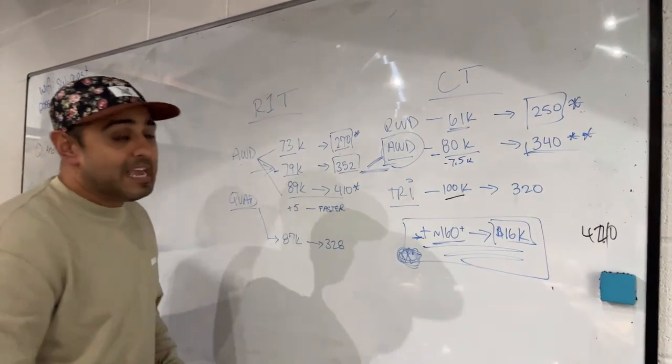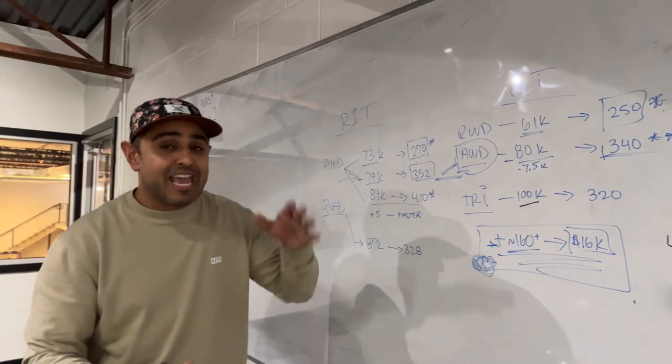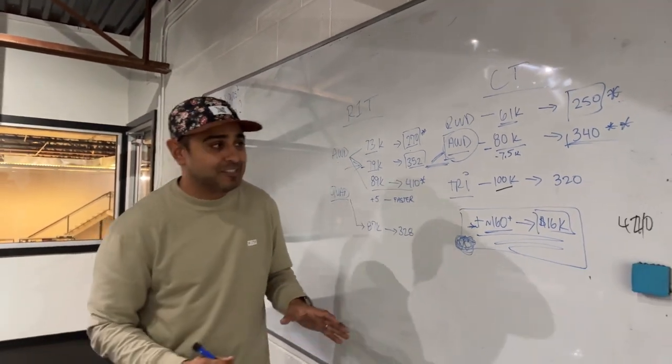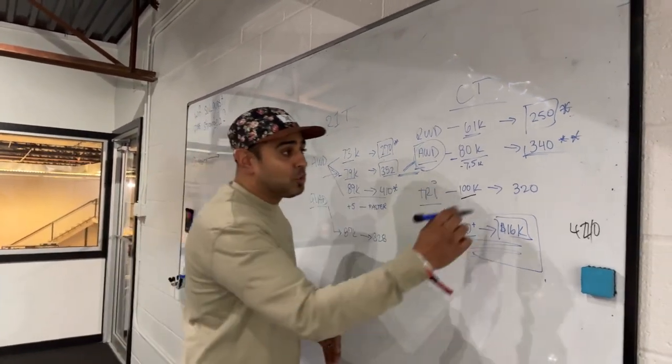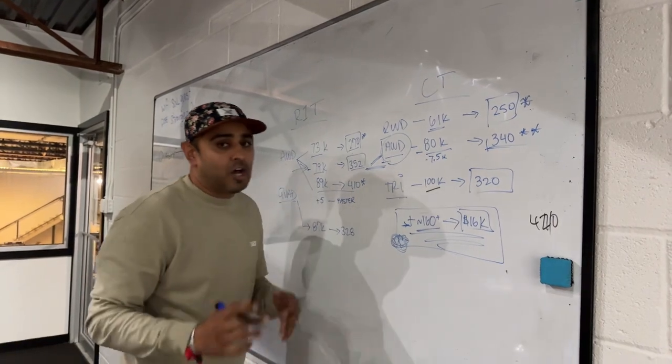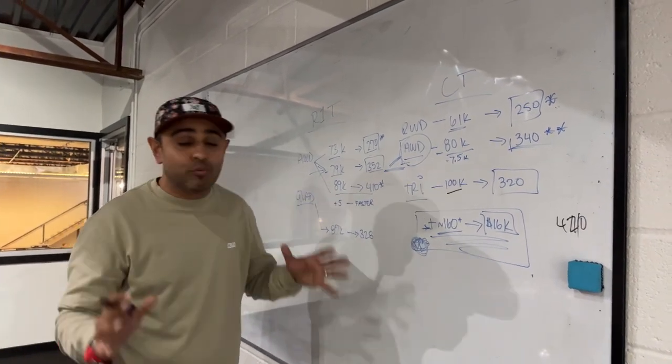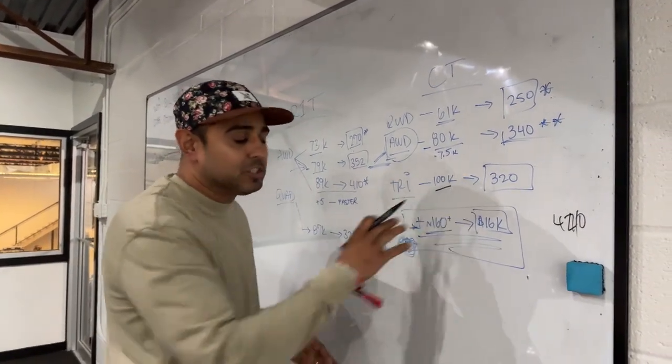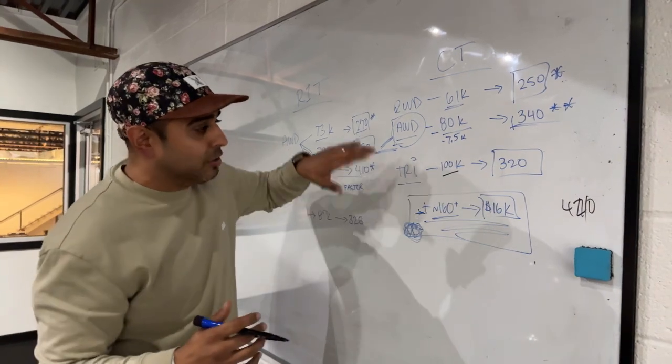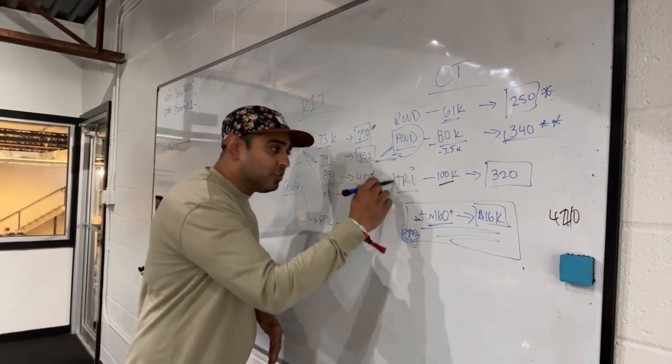If we look past that, you've got a tri-motor Cybertruck. This was supposed to be 500 miles and $70,000. It's not 500 miles, it's 320 miles, and it's a hundred thousand dollars. Really, really off, which is just a little bit shocking. I wasn't looking at this one, I was looking at all-wheel drive, but for those of you who were looking at tri-motor, this is kind of painful.